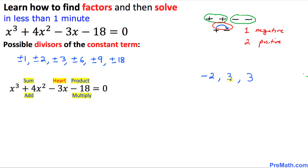So the three appropriate numbers are negative 2, positive 3, and positive 3 — one negative and two positives. If we add them: negative 2 plus 3 plus 3 equals positive 4. If we multiply them: 3 times 3 times negative 2 equals negative 18. As for the 'heart' check, let's see what that looks like.